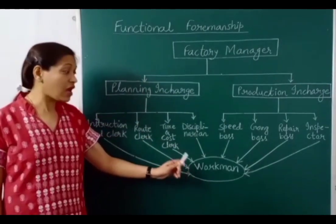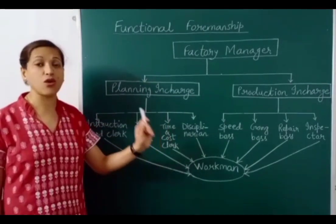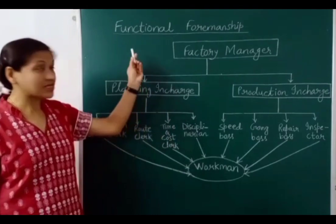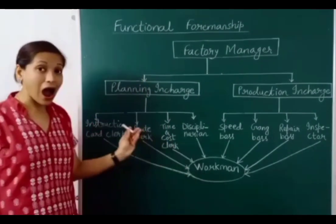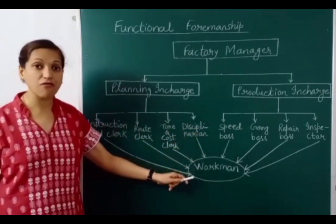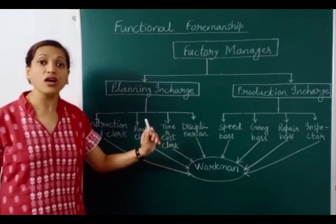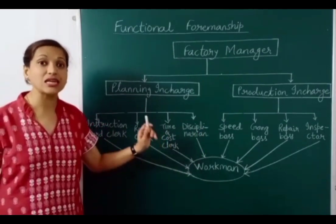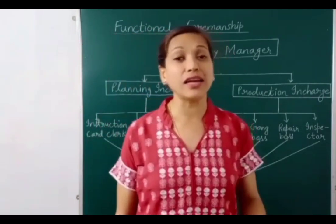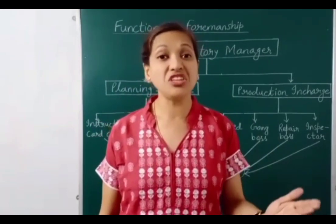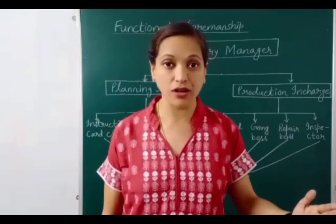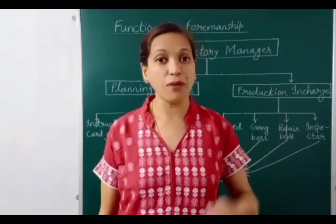However, functional foremanship contradicts the principle of unity of command. Under unity of command, a worker should receive orders from only one superior. But in this technique, one worker receives orders or instructions from multiple supervisors, which contradicts unity of command.